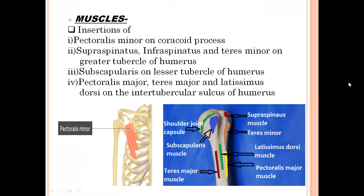Under the deltoid cover, which muscles insert? First, pectoralis minor on the coracoid process of scapula. Second, supraspinatus, infraspinatus, and teres minor on the greater tubercle of humerus. Third, subscapularis on the lesser tubercle of humerus. Lastly, pectoralis major on the lateral lip of the intertubercular sulcus, teres major on the medial lip, and latissimus dorsi on the floor of the intertubercular sulcus. Overall, eight muscles insert under the cover of deltoid.